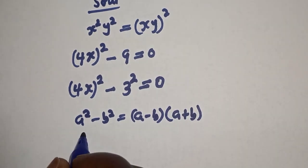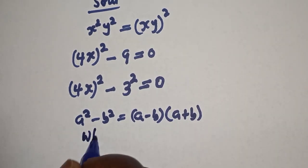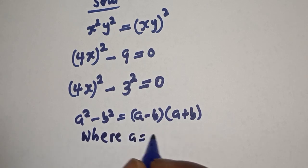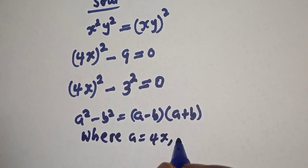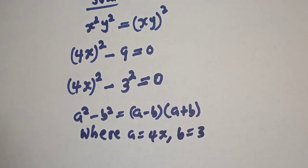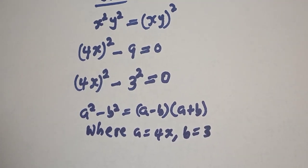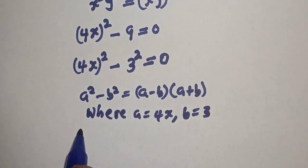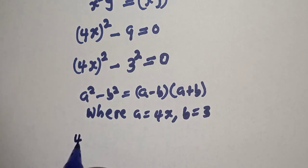Where a is equal to 4s and b is equal to 3. So we have (4s - 3) multiplied by (4s + 3).